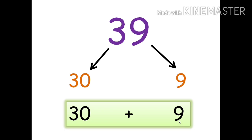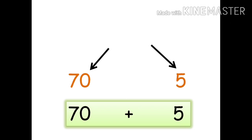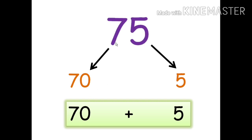Here we have the place value of 70 and 5. The expanded form is 70 plus 5. Now tell me, what is the number? Very good — the expanded form of 70 plus 5 gives us 75. The answer is 75.